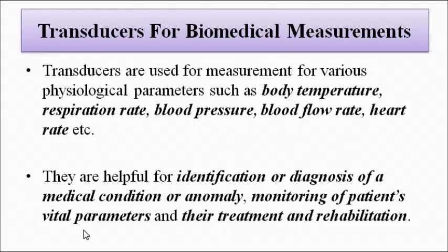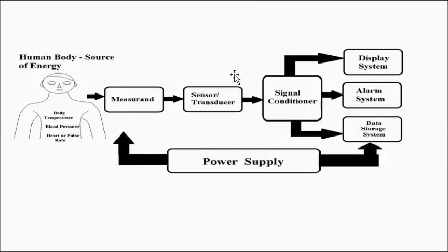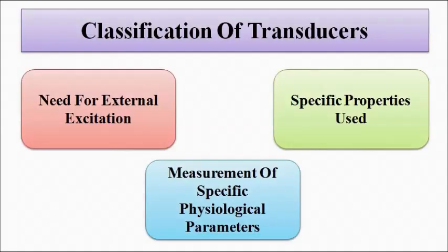For all these purposes, biomedical measurement is very essential. And for biomedical measurement, the first and most important requirement is the transducer — the sensor. Physiological transducers can be classified into three categories: first, on the basis of the need for external excitation; second, on the basis of specific properties they use for producing the output; and third, on the basis of the measurement of a specific physiological parameter.